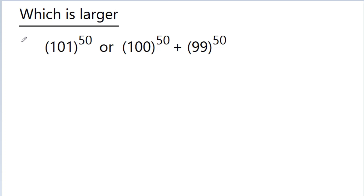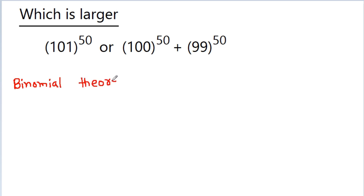In this video, we have to find which is larger: 101 to the power 50, or 100 to the power 50 plus 99 to the power 50. Here I am going to use the binomial theorem, given by famous physicist and mathematician Newton.